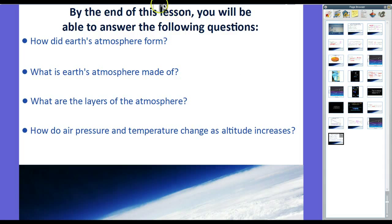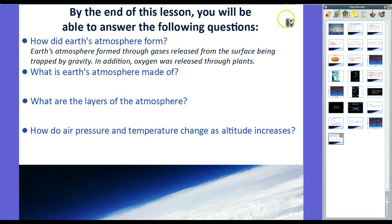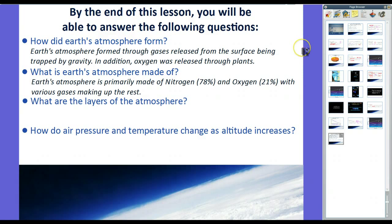So, let's wrap this up. At the end of this lesson, you would have been able to answer the following questions. How did Earth's atmosphere form? Well, it formed through gases released from the Earth's surface, being trapped by gravity. In addition, oxygen was released through plants and photosynthesis. Now, what is the atmosphere of the Earth made of? Well, Earth's atmosphere is primarily made of nitrogen, 78%, and oxygen, 21%, with various gases, carbon dioxide, water vapor, argon, things like that, making up the rest.